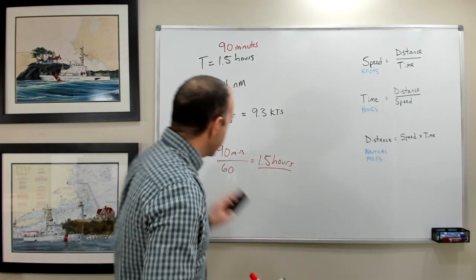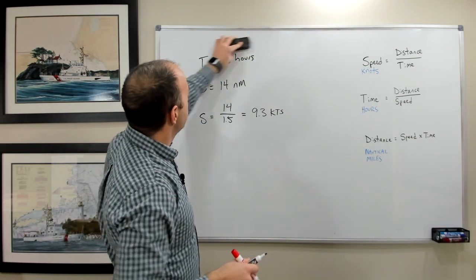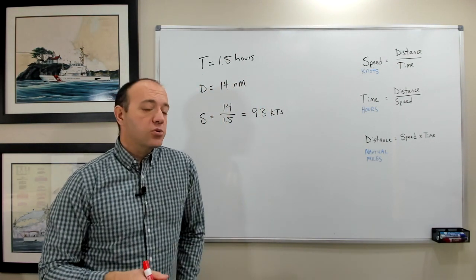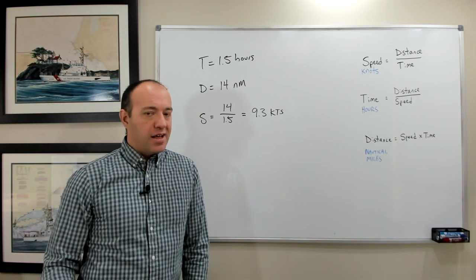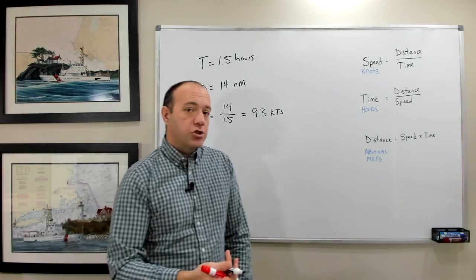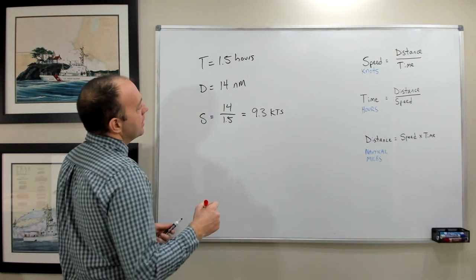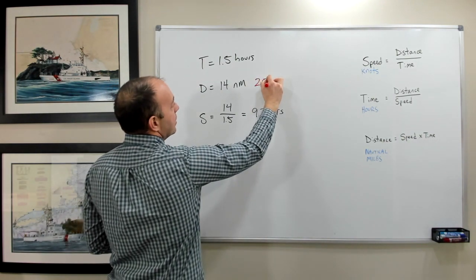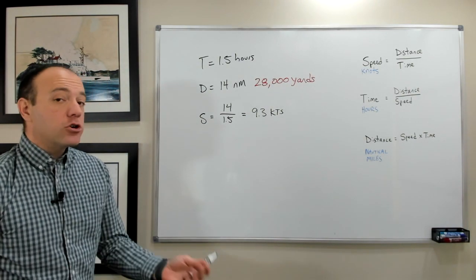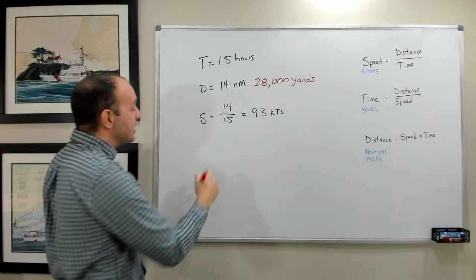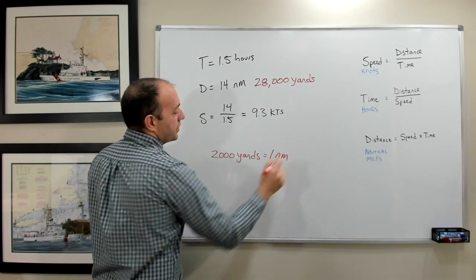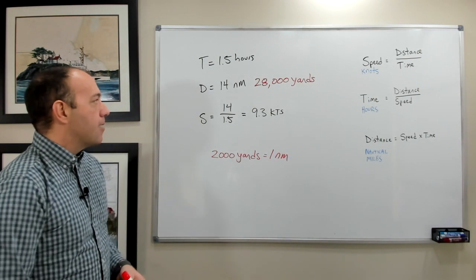Likewise, maybe sometimes you don't have information about the nautical miles that you've covered. Maybe your chart plotter is set to yards. That's a very common thing to do on navigation is using yards instead of nautical miles. We generally don't use meters or kilometers in nautical navigation, but you could. There's always just a conversion factor for that. So for example, if maybe you covered 28,000 yards in that same 1.5 periods. Well, there's a conversion for yards to nautical miles that it's very easy. There is 2,000 yards in one nautical mile. So that's just a handy thing to know when we're navigating.